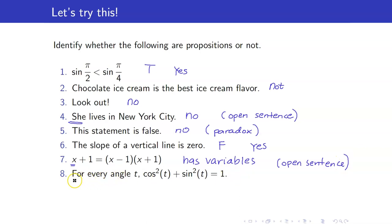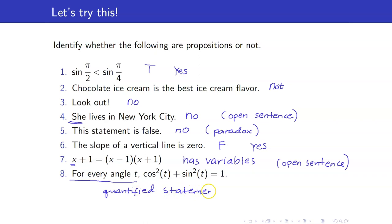Number eight: 'For every angle t, cosine squared t plus sine squared t is equal to one.' Take note here that although you have the presence of variables, you defined what that t is — t is an arbitrary angle. So this is what you call a quantified statement. Therefore, this is a proposition. In particular, its truth value is true. We will tackle quantified statements in our succeeding lectures.